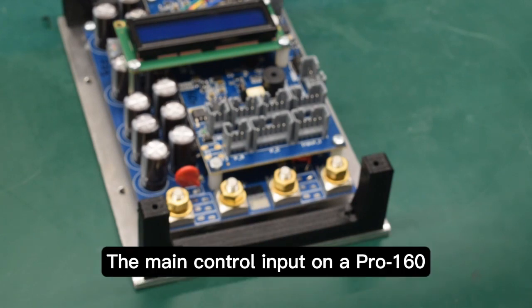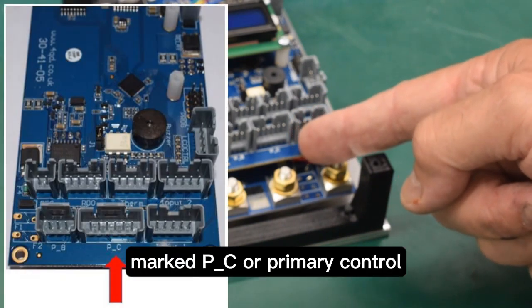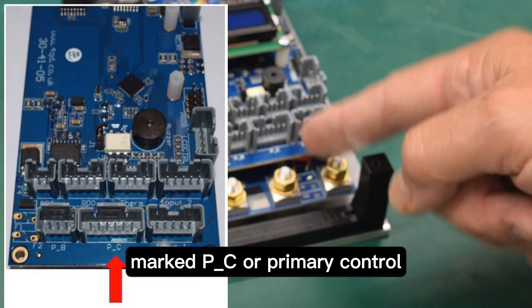The main control input on a Pro 160 is the six-way connector marked P underscore C or primary control.